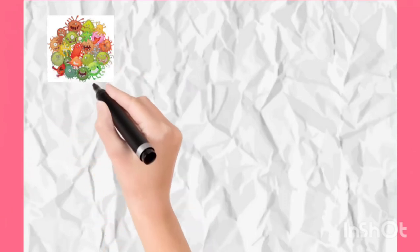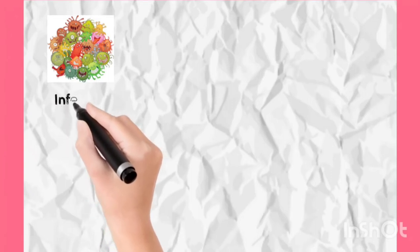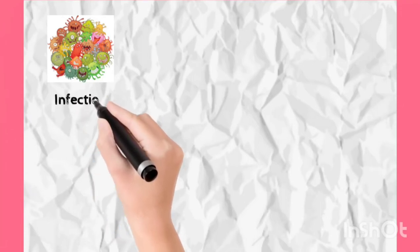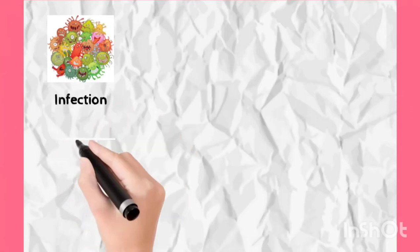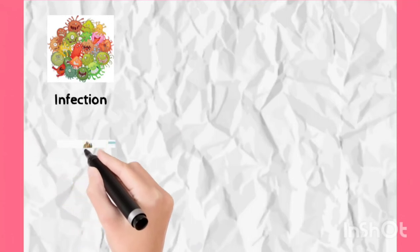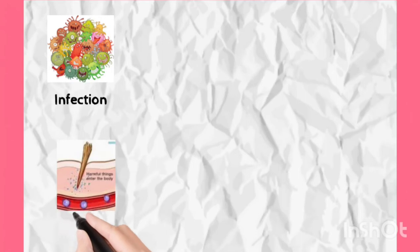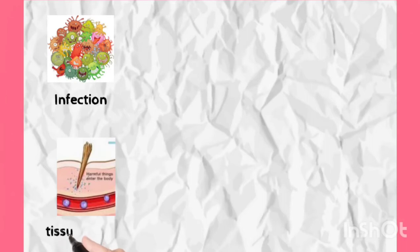What actually happens is: whenever any kind of microbes enter into our body — like viruses, bacteria, or any other parasite like Entamoeba histolytica — or any tissue damage takes place, our body tries to heal that infection or injury. If there is an infectious agent, our body tries to remove it. This process of removal is known as inflammation.